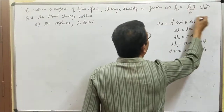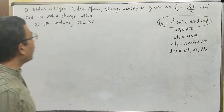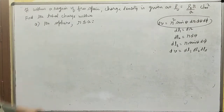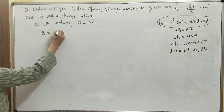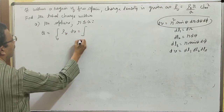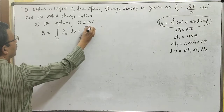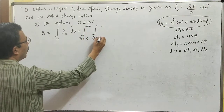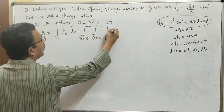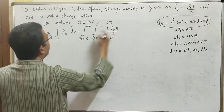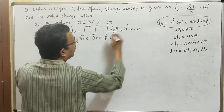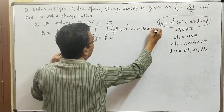The problem is in spherical coordinate system. Find the total charge in the sphere r ≤ a. Q = ∫∫∫ ρᵥ dV. The volume integral is a triple integral: r varies from 0 to a, θ varies from 0 to π for a sphere, φ varies from 0 to 2π. ρᵥ = ρ₀ · (r/a), and dV = r² sinθ dr dθ dφ.